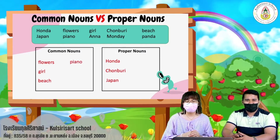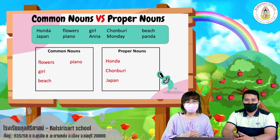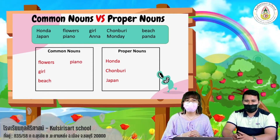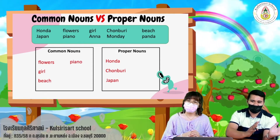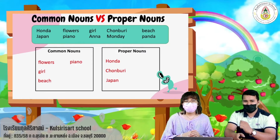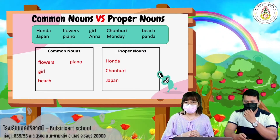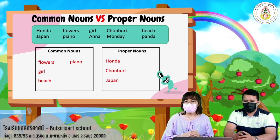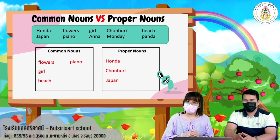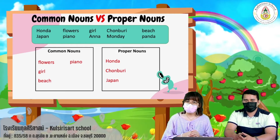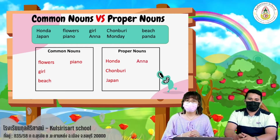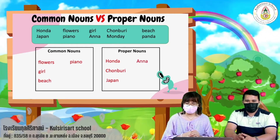Next noun, Anna — is it common or proper noun? It's a person's name. It's a proper noun.